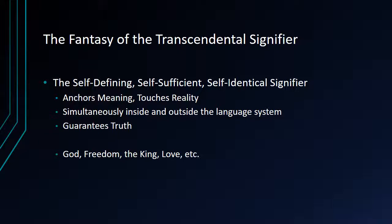And as many post-structuralist thinkers have pointed out, this leads us to the fantasy of the transcendental signifier. The transcendental signifier is the word that is self-defining, that defines itself, that is self-sufficient, that relies on no other words to give it meaning, no other concepts, that is self-identical, that doesn't mean anything else except for itself. This fantasy — that there is some word that anchors meaning, that has a direct tie to reality, that is simultaneously inside the language system and outside it because it touches the real world — guarantees truth, guarantees meaning, and prevents any word from sliding into another meaning. And there are many different names for this transcendental signifier within different situations.